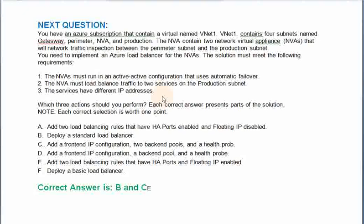You have an Azure subscription that contains a virtual network named VNet1. VNet1 contains four subnets named Gateway, Perimeter, NVA, and Production. The NVA contains two network virtual appliances that will perform network traffic inspection between the perimeter subnet and the production subnet. You need to implement an Azure load balancer for the NVAs. The solution must meet the following requirements: the NVAs must run in an active-active configuration that uses automatic failover. Second, the NVA must load balance traffic to two services on the production subnet. The services have different IP addresses.